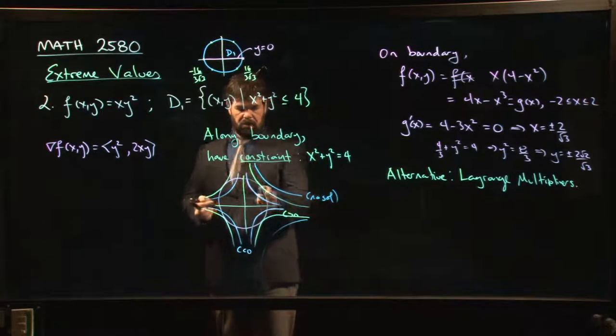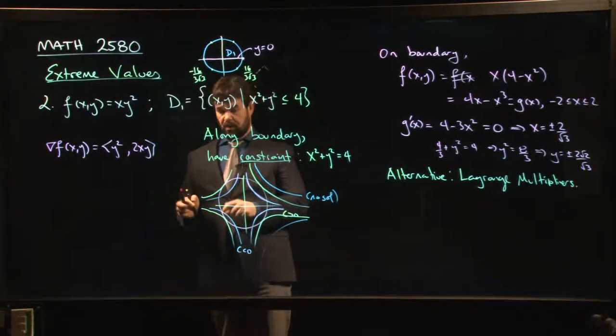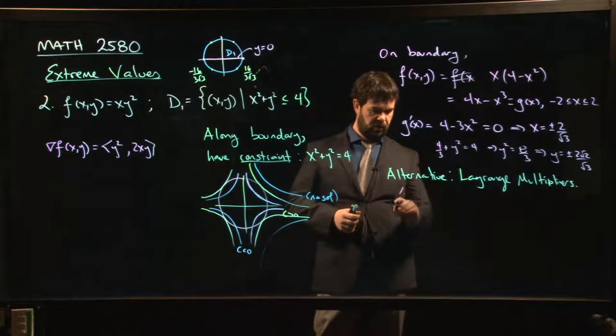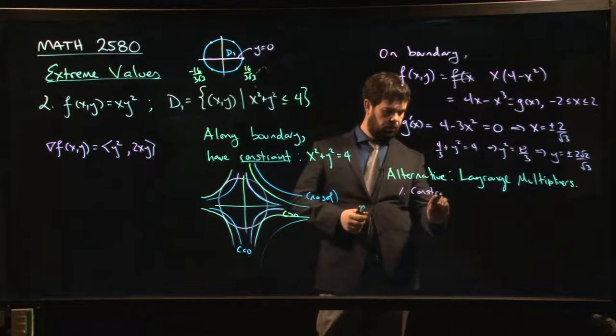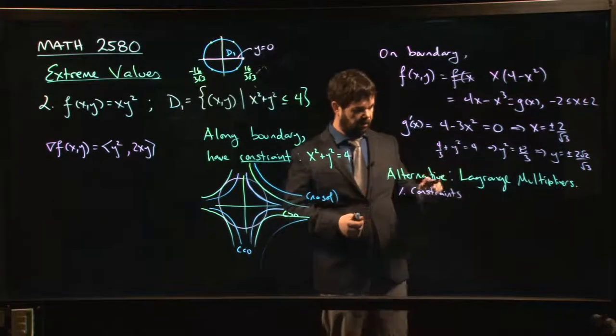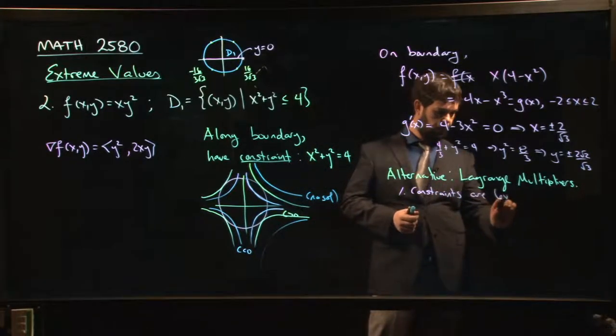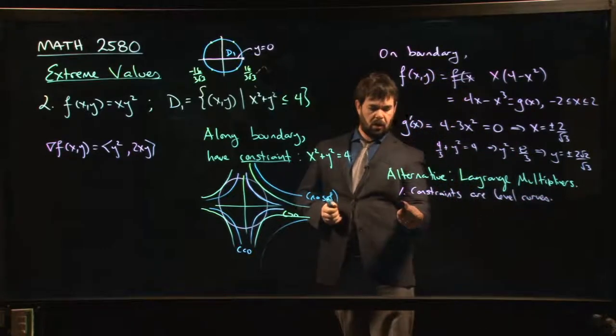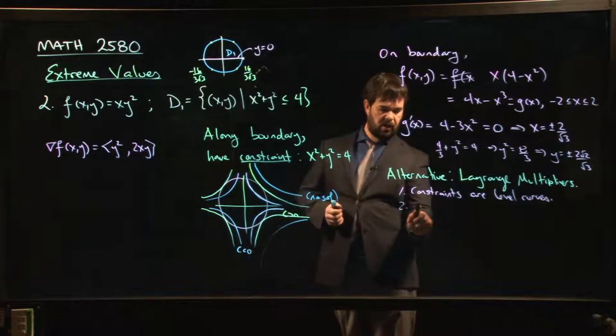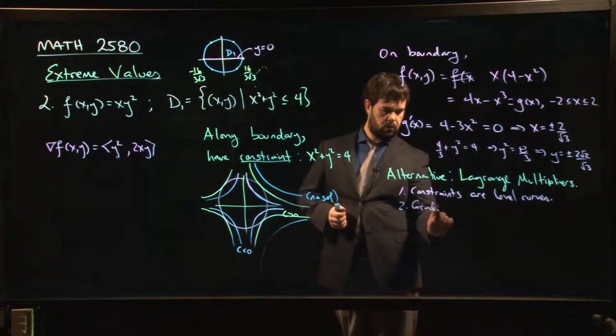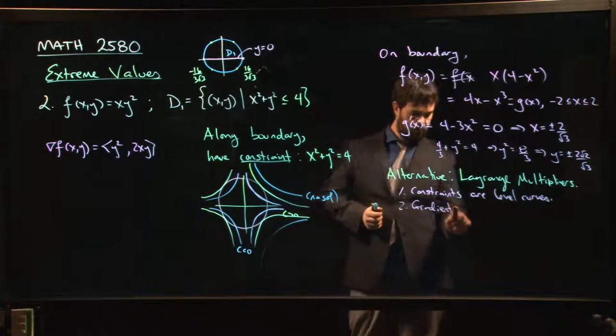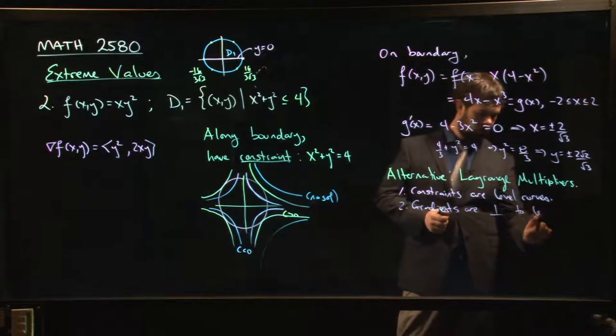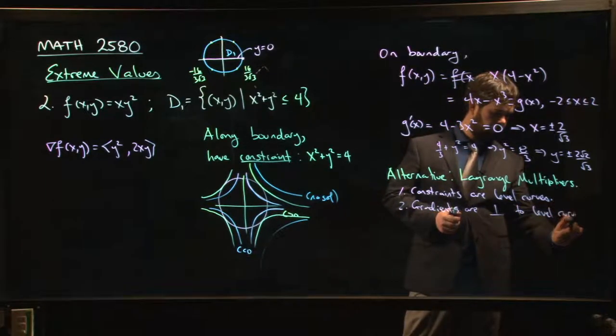Now, one of the things we can say about, and remember, the constraint is itself a level curve. Now, there's two things to keep in mind. One is that Lagrange multipliers are going to work in these situations where constraints are level curves. The other thing to remember is that gradient vectors, well, they're always perpendicular to level curves.